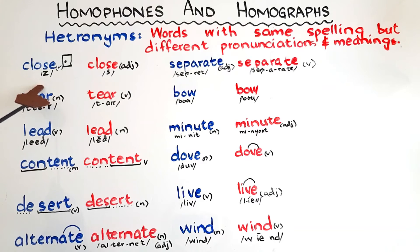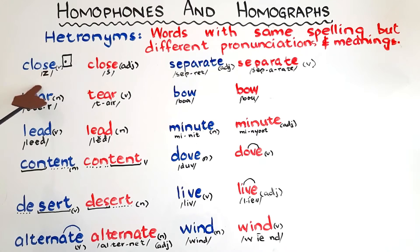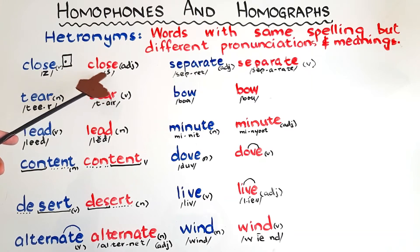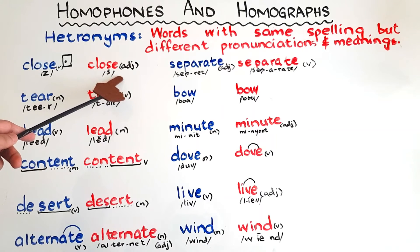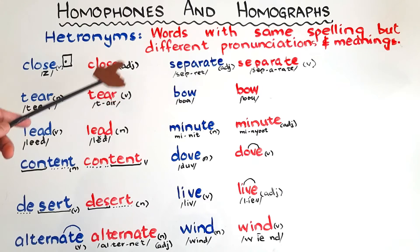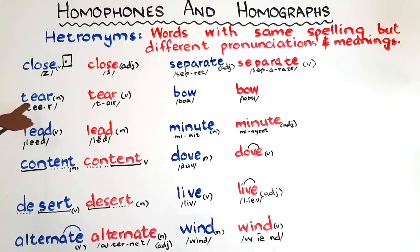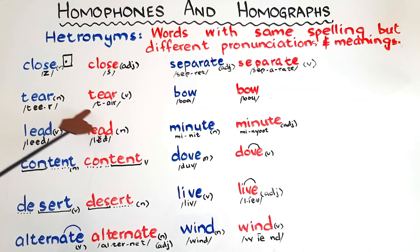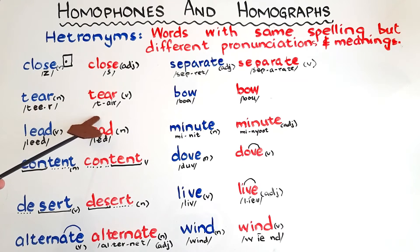The first word is 'close' — as in 'can you please close the door', the opposite of open, where the letter S says the Z sound — and the heteronym 'close', the opposite of far, as in 'his house is close to mine'. Then 'tear' — the liquid that comes out from our eyes — and 'tear', meaning to rip something. 'Tear' is a noun and 'tear' is a verb.